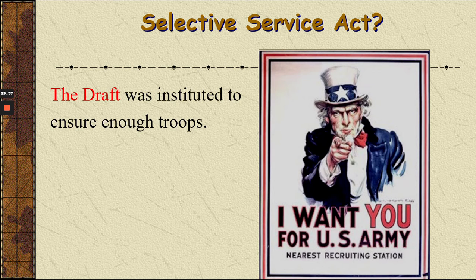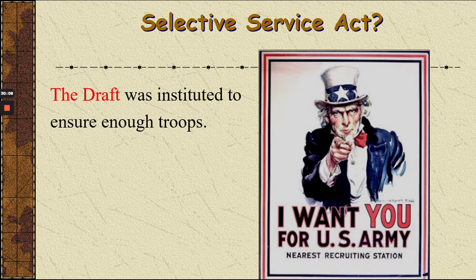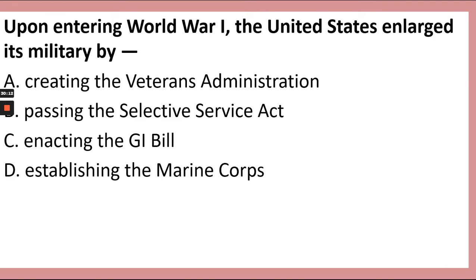The Selective Service Act is the draft. When men turn 18, you have to go to the post office and sign up for the Selective Service. Just in case we ever have a war and you need to be drafted. We haven't had any drafts since the Vietnam War, but you still have to do it at 18. Upon entering World War I, the United States enlarged its military by passing the Selective Service Act. If you see the GI Bill and are tempted, you're thinking World War II — the GI Bill was a benefits program for veterans.